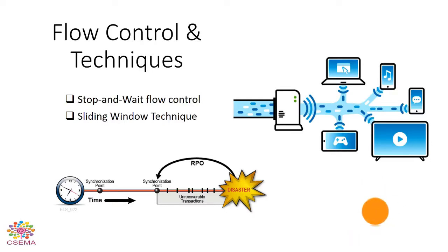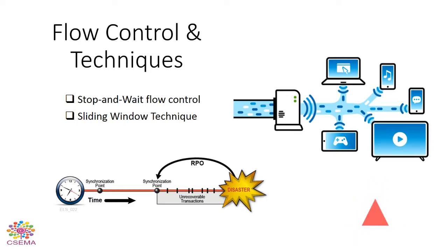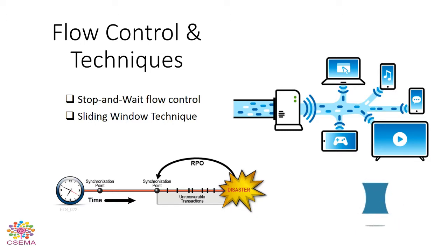Welcome to CSEMA. As we well know, the OSI model — Open System Interconnection — is the model used to facilitate communication between two different kinds of hardware and differently configured devices. That's the reason why we can communicate using cell phones and smartphones to computers, or any operating systems like Windows to Mac, Mac to Linux. All the reasons behind these communications is the OSI model.